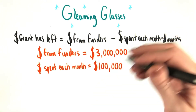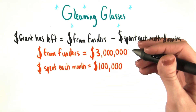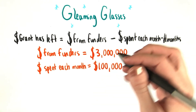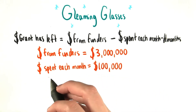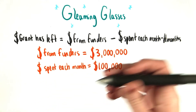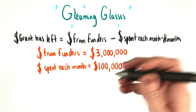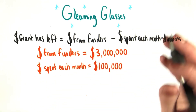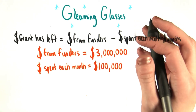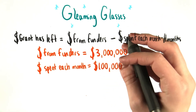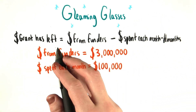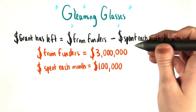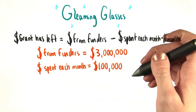Like we've been talking about for the past few minutes, any time you have two things on either side of an equal sign, you can substitute them for one another in other equations. So let's see if you can figure out another way to write an equation for the amount of money that Grant has left, this time using these new numbers.